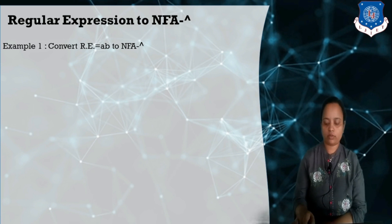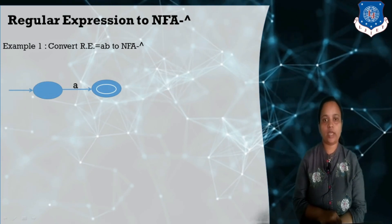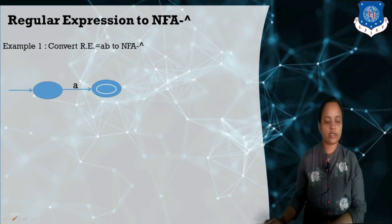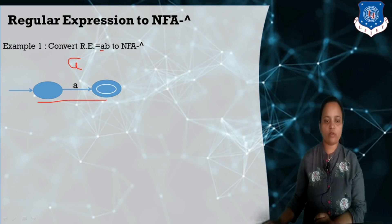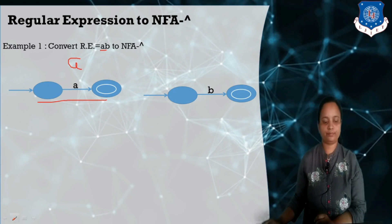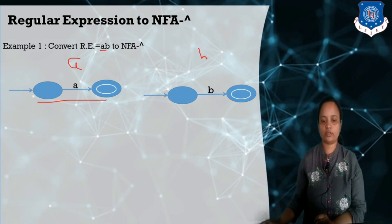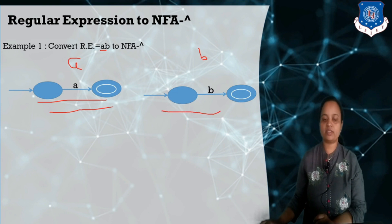Thompson Construction Method says that if I have only 'a', I can draw two states. If I have a regular expression 'a' only, I can accept the string containing only 'a'. If I have only 'b', I need to construct this similarly. This is the NFA-null. This regular expression says I have to combine the first dot second — it means a dot b.